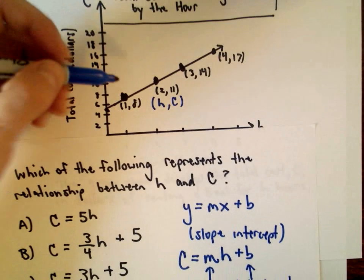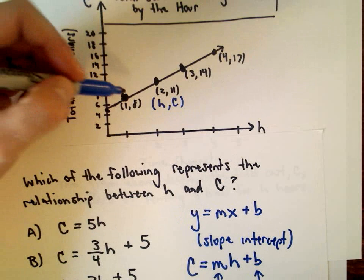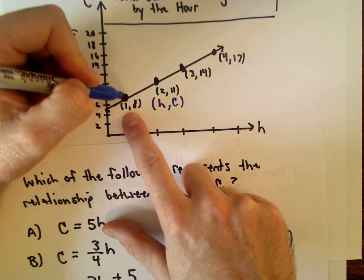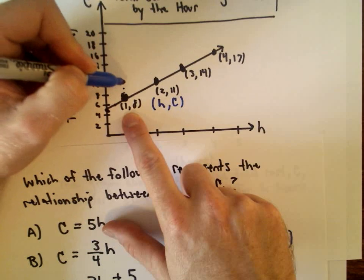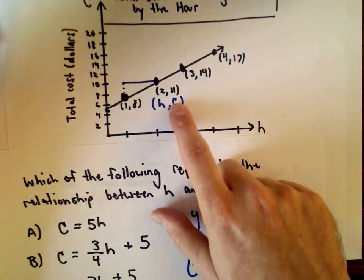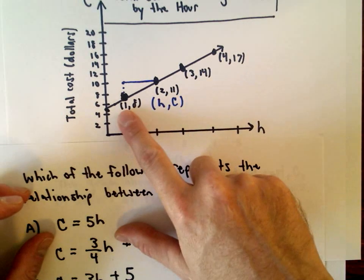Well, what's the slope? That's the rise over the run, so how much do you go up and how much do you go over to get to the next point? Well if we go from one comma eight up to two comma eleven, I'm going up one two three units, I'm going over one unit.